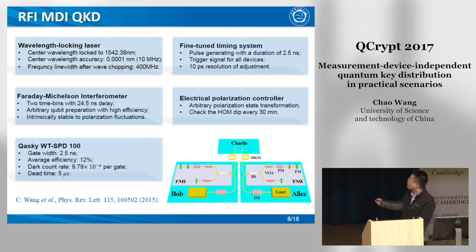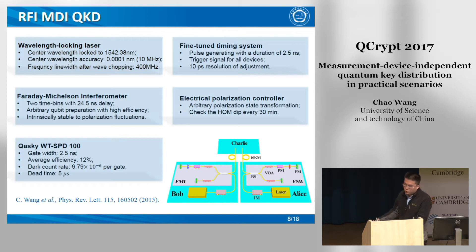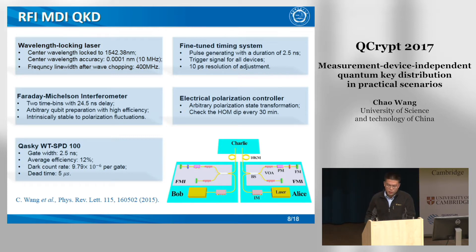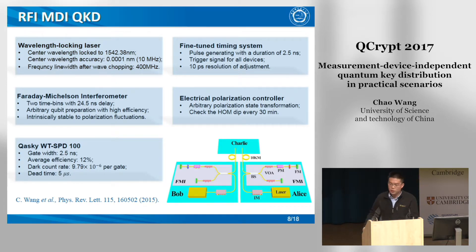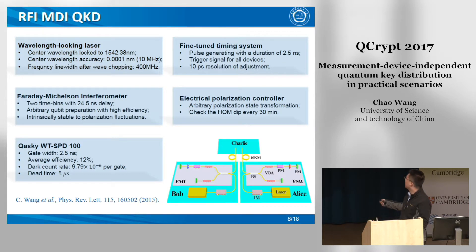Furthermore, we use a Faraday-Michelson interferometer for quantum state preparation. The optical switches determine the basis choice, and the phase modulator controls the detailed phase difference between the two arms. The reciprocating structure of the Faraday-Michelson interferometer improves the extinction ratio of the optical switches and prevents polarization discrepancy between time bins. Finally, we obtain all gains and yields in all bases and obtain the final results.